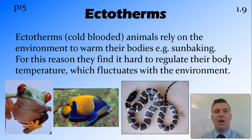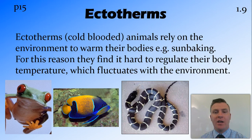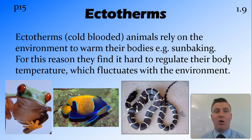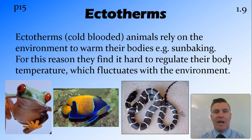Firstly, ectotherms — what you might have heard referred to as cold-blooded animals — don't produce their own energy. Rather, they rely on energy from the environment to heat up their bodies. Ectotherms might be seen out in the sun sunbaking in order to absorb heat energy and warm up their bodies. Because they don't create their own heat, they find it hard to regulate body temperature. So this fluctuates with the environment — if it's a cold night the temperature drops quite significantly, and if it's a hot day it rises quite significantly — resulting in a large daily change in core body temperature.